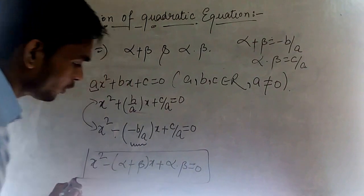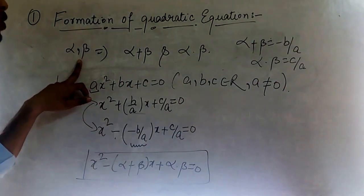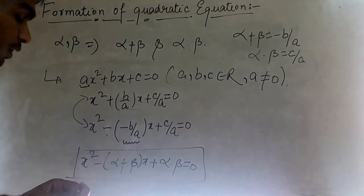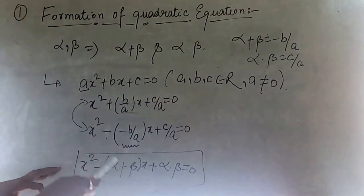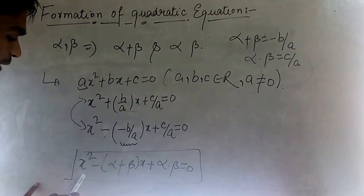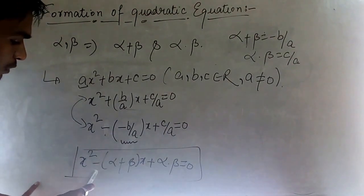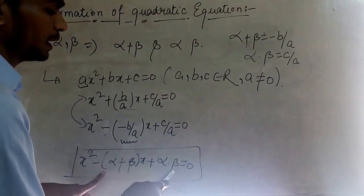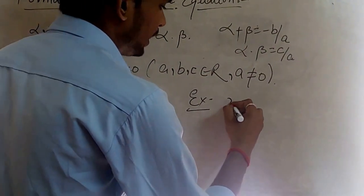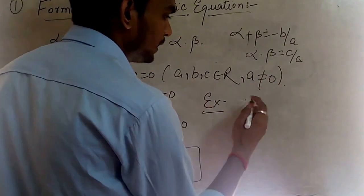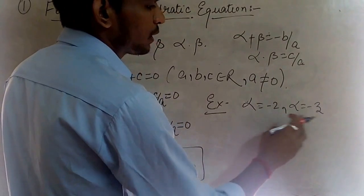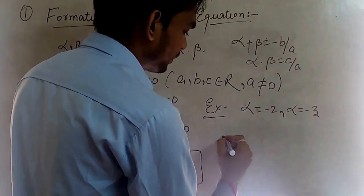So, if we have the value of the roots alpha and beta of a quadratic equation, we can find alpha + beta and alpha × beta, and then form the quadratic equation. The formula is: x² − (alpha + beta)x + (alpha × beta) = 0. For example, if alpha = −2 and beta = −3, then we need to find the quadratic equation.